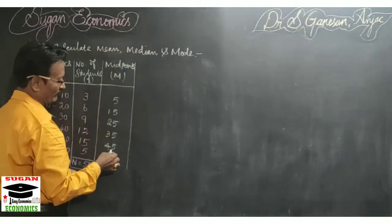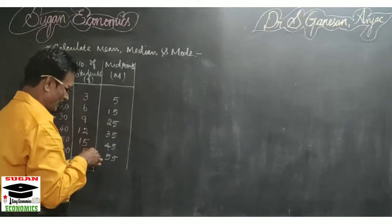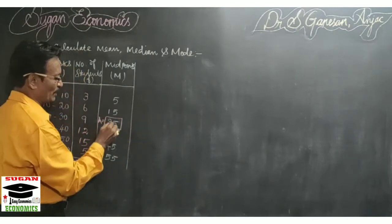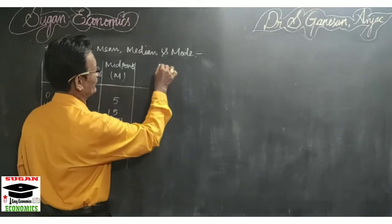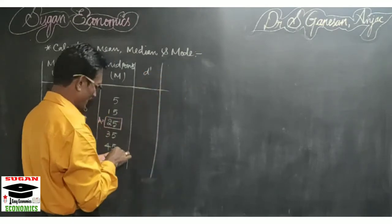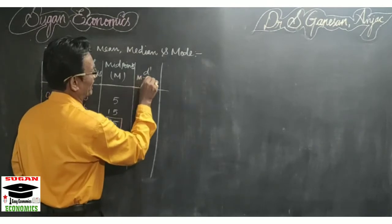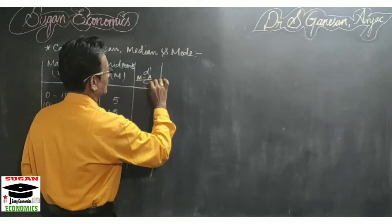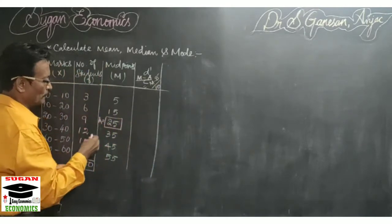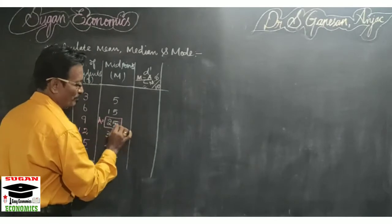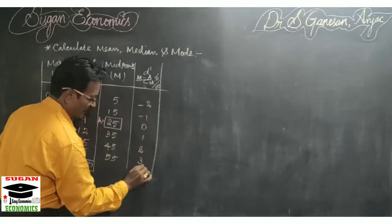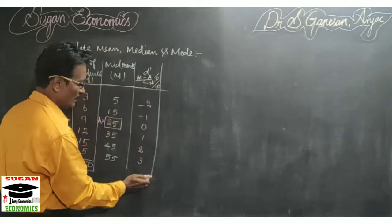Now after calculating the mid values, we have to identify a particular value from the midpoints — we identify any one value as our assumed mean. Here I have assumed 25 as our assumed mean. Now we have to calculate the d' value, where d' is equal to (m − a) / c, that is (m − 25) / 10. The value assumed as mean gets 0, then minus 1, minus 2 going down, and 1, 2, 3 going up. How these values are derived has already been explained in the previous videos.